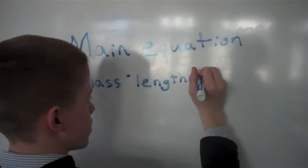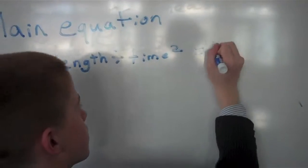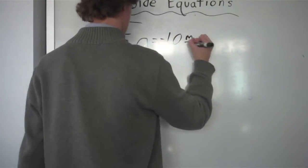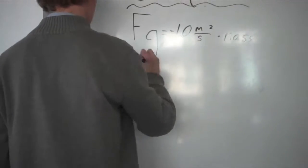Mass times length divided by time squared equals force. The force of gravity equals negative 10 meters per second squared times mass.